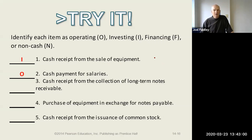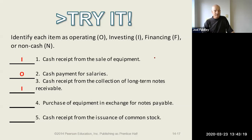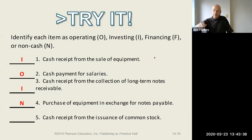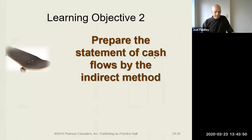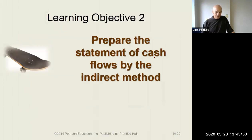Purchase of equipment in exchange for a notes payable is interesting — there's no mention of cash. Those first three items said 'cash this, cash this, cash this' — but purchase of equipment in exchange for notes payable is an off-statement disclosure or footnote. It's non-cash. Cash receipt from the issuance of common stock sounds like financing, because common stock is equity. If it said bonds payable it would be the same, even though it's a long-term liability. So that's financing.